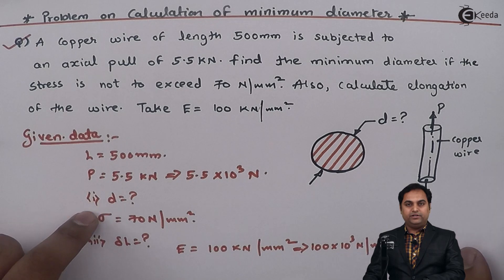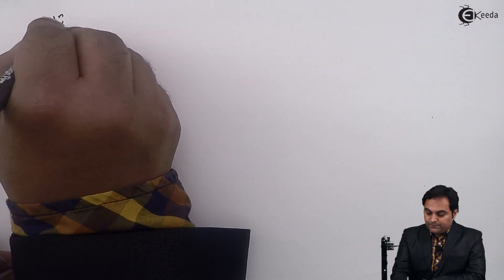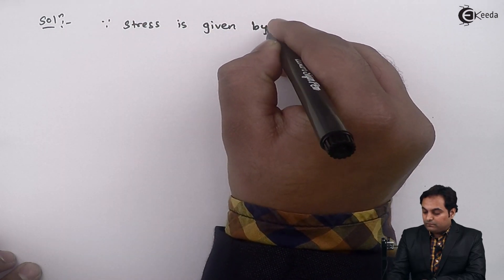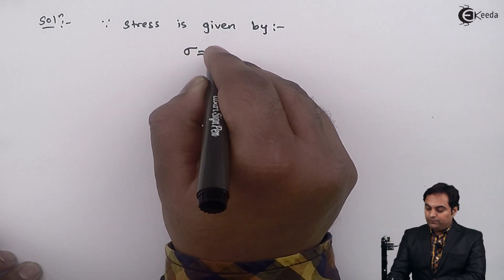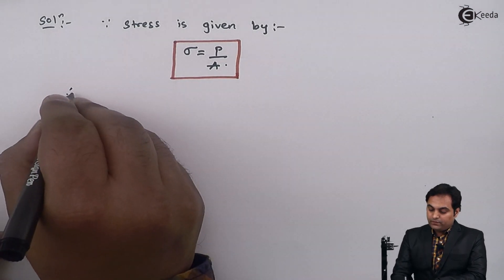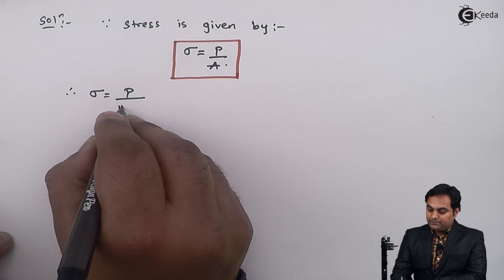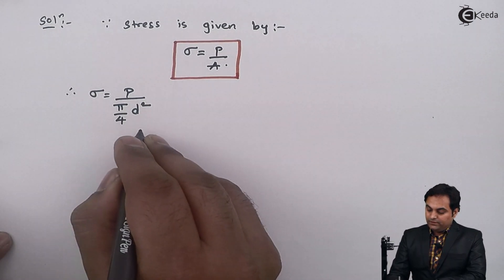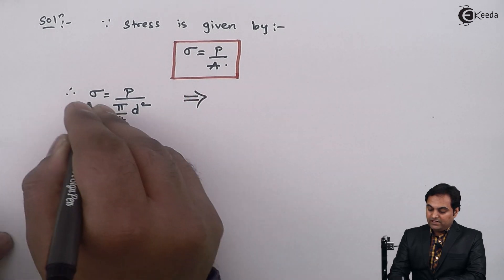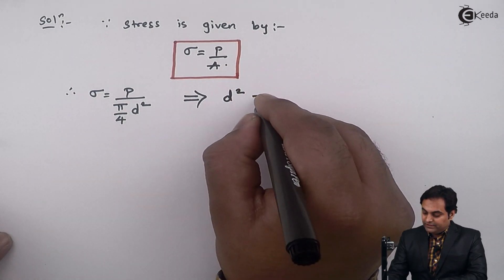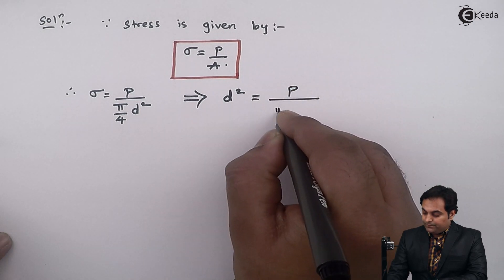In the solution part, stress Sigma is given by load upon area, so Sigma equals P upon A, where area A equals pi by 4 into D square, since it is a circular cross-section. Rearranging, D square is shifted to the other side, giving D square equal to P upon pi by 4 into Sigma.